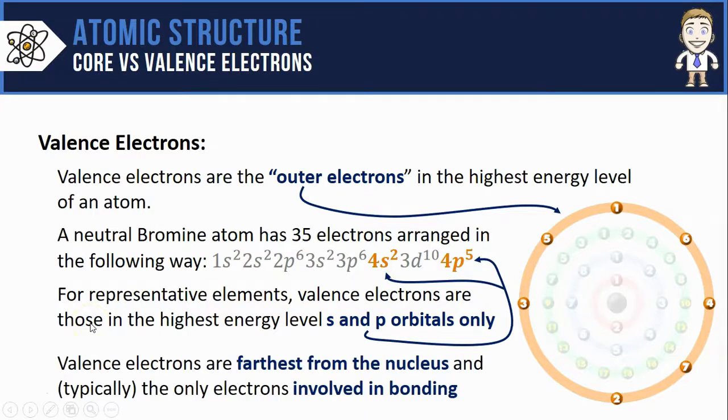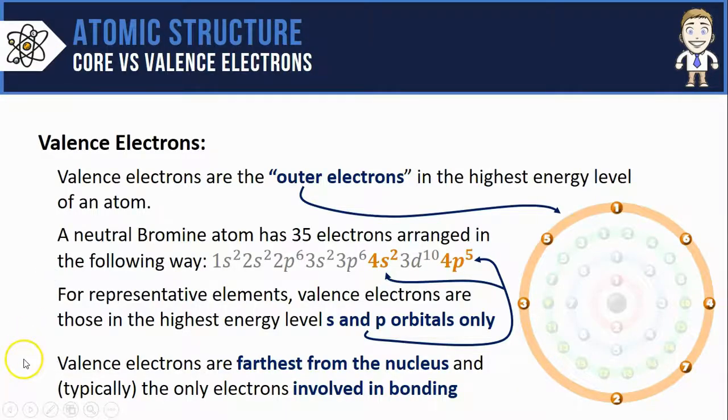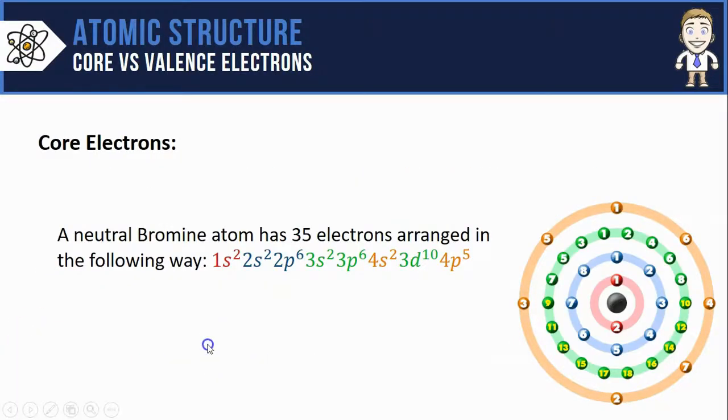Lastly, why do we care about valence electrons? Well, they are the farthest away from the nucleus that's going to be super important later on. They're also typically the only ones involved in bonding to other atoms. These are really important ideas about valence electrons. Make sure you've taken a moment to write them down. Let's switch now to the core electrons.